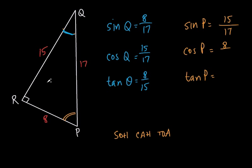If you look at this, it's kind of interesting. The sine of angle Q and the cosine of angle P are actually the same — both are 8 over 17. And the cosine of Q and the sine of P are the same — both are 15 over 17. Also, the tangent of Q and the tangent of P are inverses of each other: 8 over 15 versus 15 over 8. There's a relationship between those two as well.